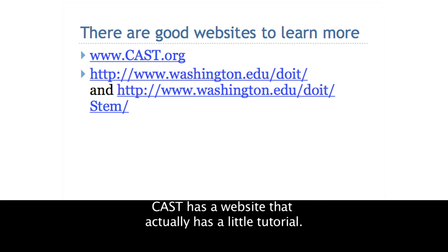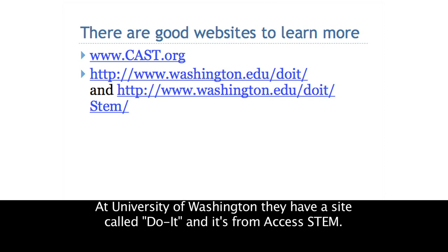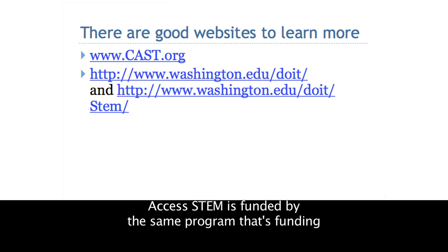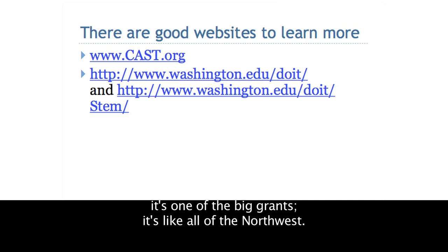There are some good websites. CAST has a website with a tutorial you can go through yourself — it has videos, all closed captioned, and lots of activities. At the University of Washington, they have a site called Do It from Access STEM. Access STEM is funded by the same program funding this grant — the Research and Disability Education Grant. It's a big center, an alliance covering all of the Northwest, and they have a whole bunch of resources on the UW site that could be helpful.